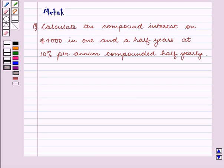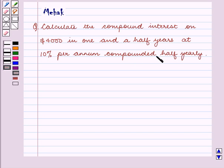Hello and welcome to the session. In this session we are going to discuss the following question: calculate the compound interest on $4,000 in one and a half years at 10% per annum compounded half yearly.